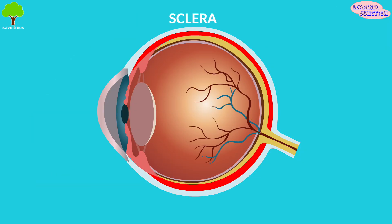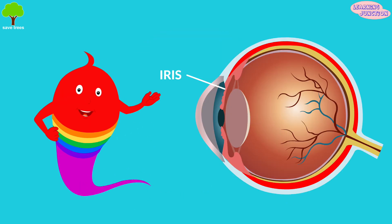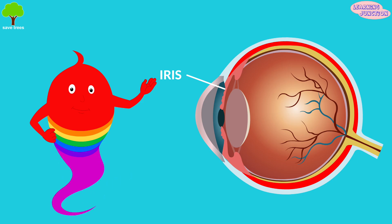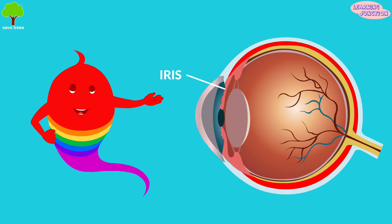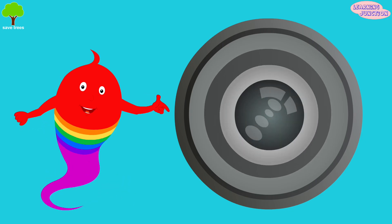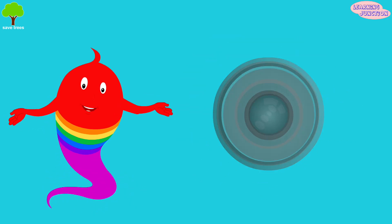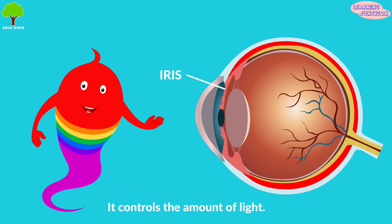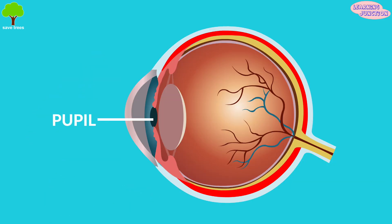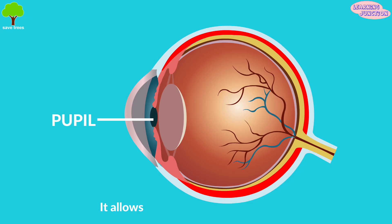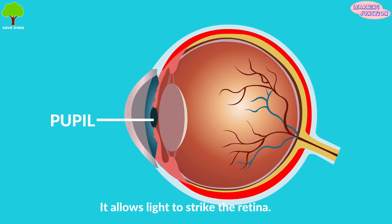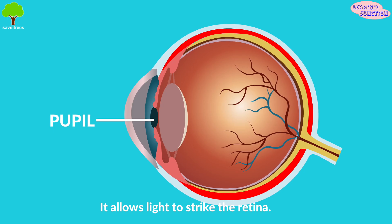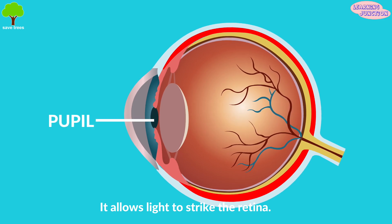Sclera. This is the tough white skin that covers the outside of the eyeball. Iris. It is the colored part of our eye that works like a camera shutter. It controls the amount of light that enters the eye. Pupil. This is the hole in the middle of the iris and it lets light into our eye.